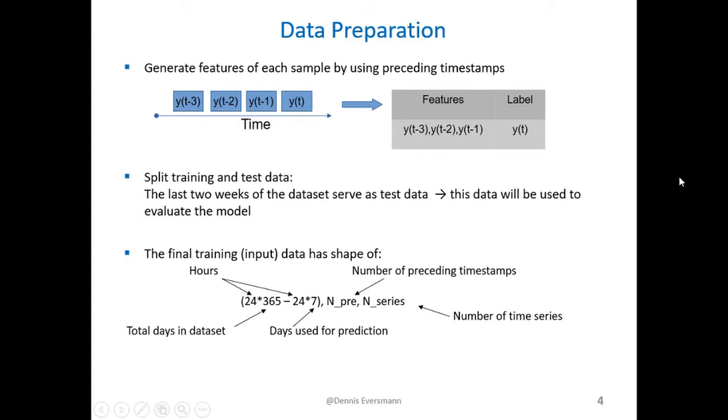In the next step I created a feature space for each label by using the preceding cell usages of the individual cells, which is shown in the upper sketch.